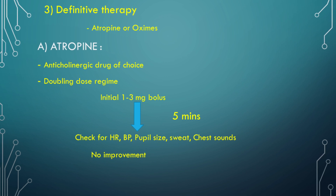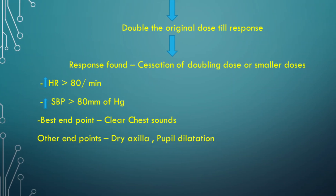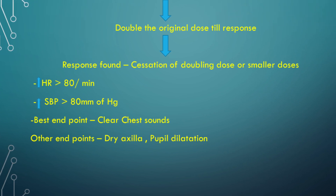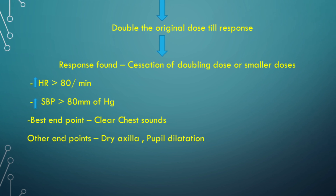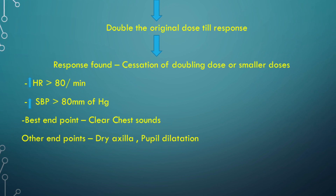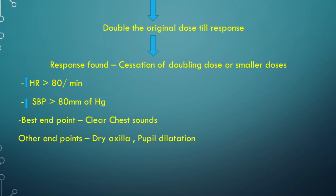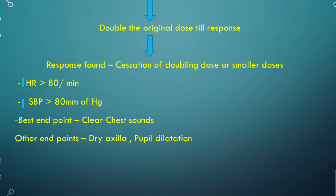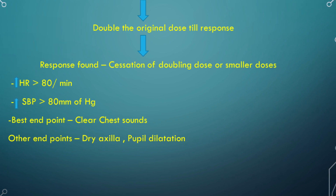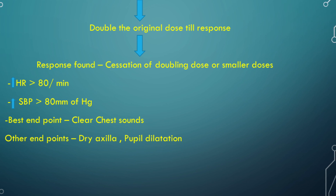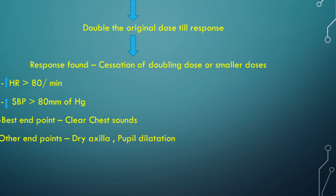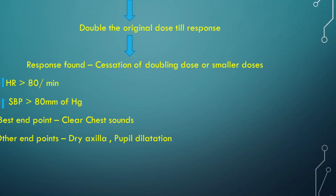If no improvement is found, double the original dose and review the patient every 5 minutes, doubling the dose until a response is found. If a response is present, either cessation of doubling or smaller doses should be considered. Response means increase in heart rate more than 80 beats per minute, systolic blood pressure more than 80 mmHg. The best endpoint of atropinization is that the chest should be free of crackles on auscultation. Other clinical endpoints are dry axilla and pupils of reasonably normal size.